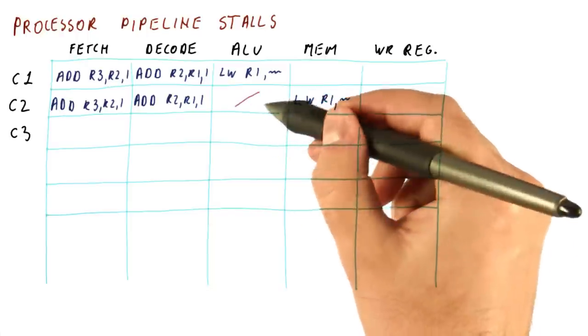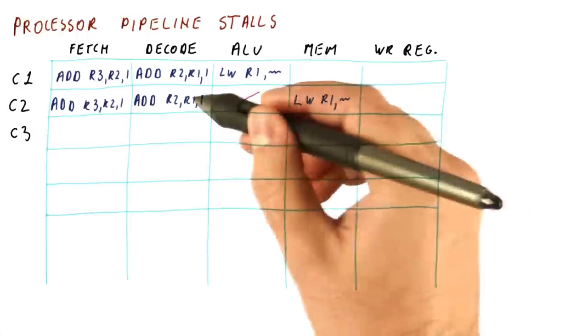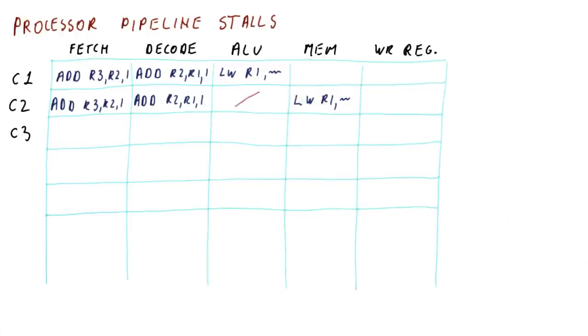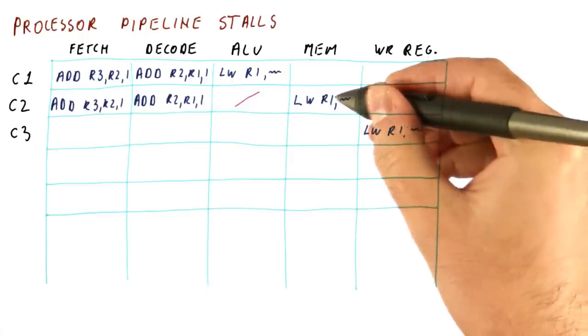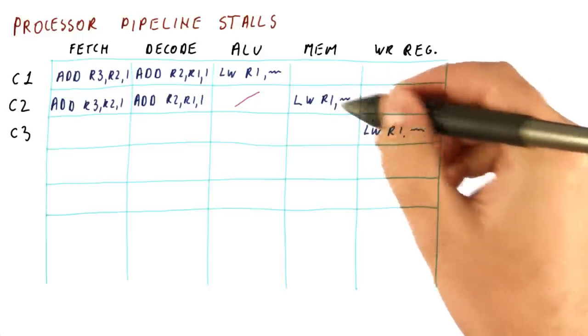We can have more than one bubble because of a single dependence between instructions. So in this example, next cycle, the load has loaded the value from memory into R1, and is now writing that value to a register.